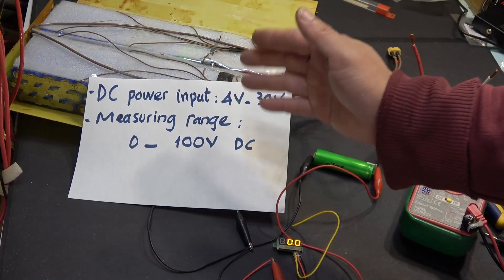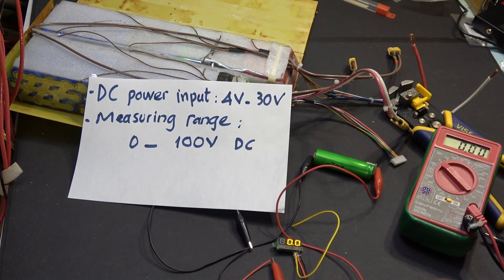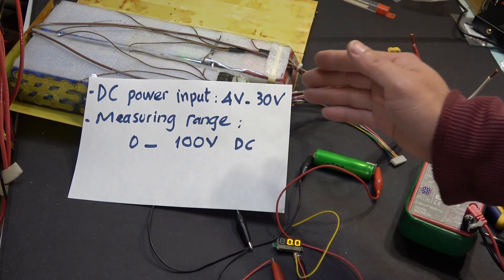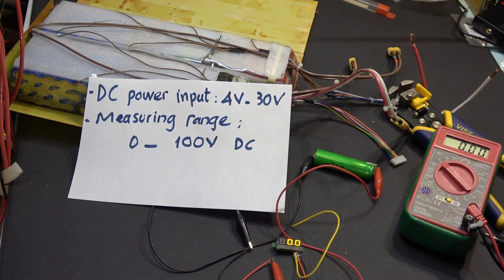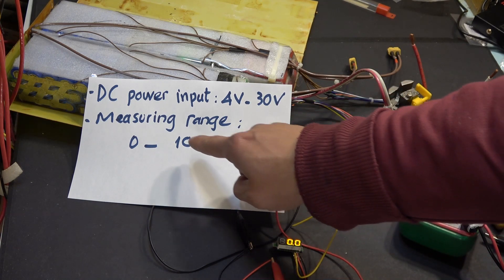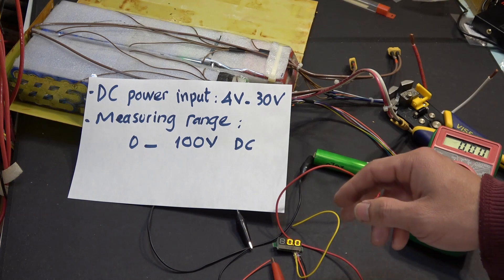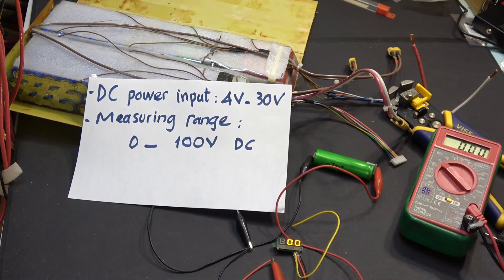So here are the specs of this voltage monitor. It has to be powered by a DC power source, voltage from 4 to 30 volts DC. It can display battery voltage and the range is from 0 to 100 volts DC.